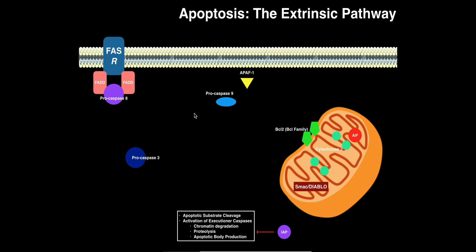The ultimate trigger for the extrinsic pathway of apoptosis is a tumorigenic — cancerous — cell. Cancerous cells grow and divide without inhibition, having lost contact inhibition. Most cancer cells will cease expression of the inhibitor that turns off the FAS receptor. When that inhibitor is lost, the FAS receptor now has the potential to become activated.